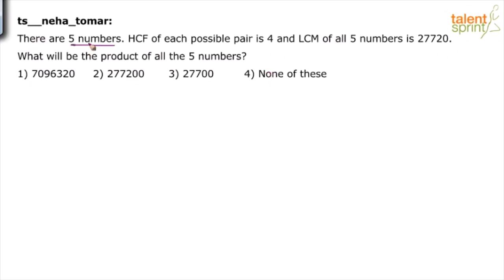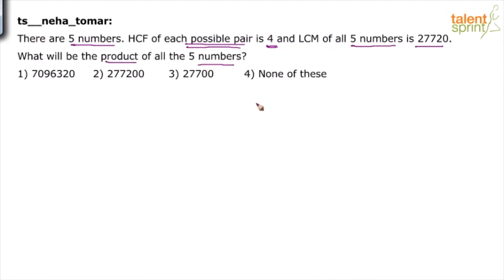Now there are five numbers. HCF of each possible pair is 4 — remember, there are five numbers, so there are multiple pairs possible. Each possible pair's HCF is 4, and the LCM of all five numbers is 27,720. Based on this data, we need to find the product of all five numbers. This point about HCF is very important here.